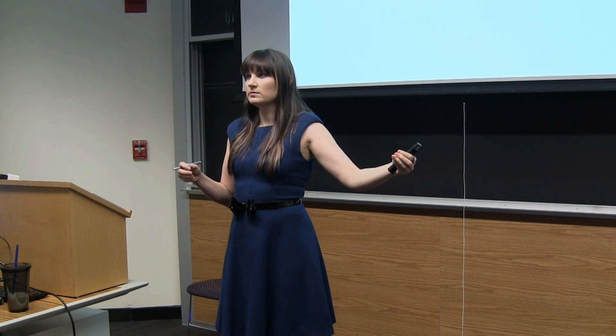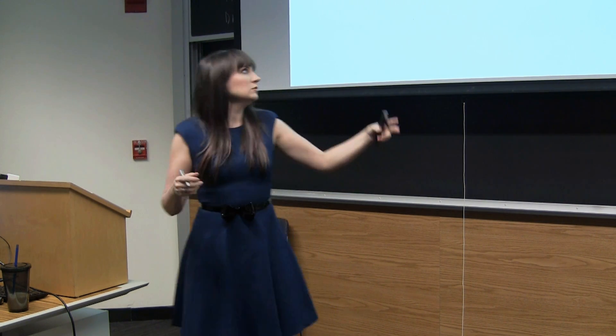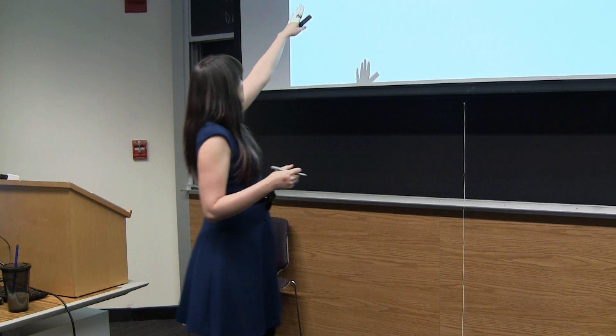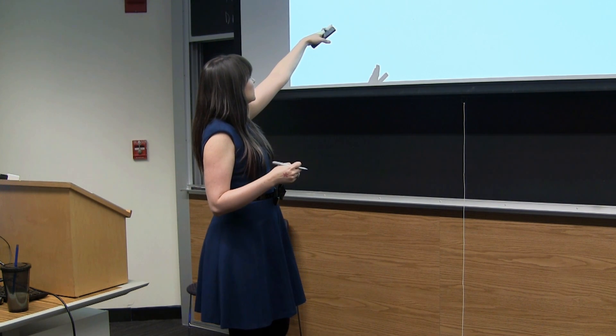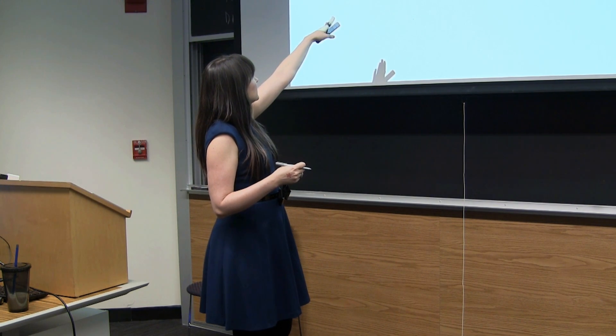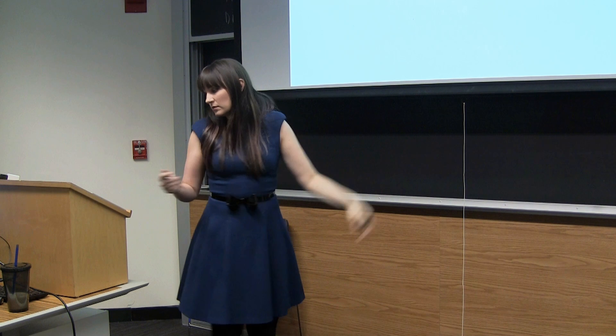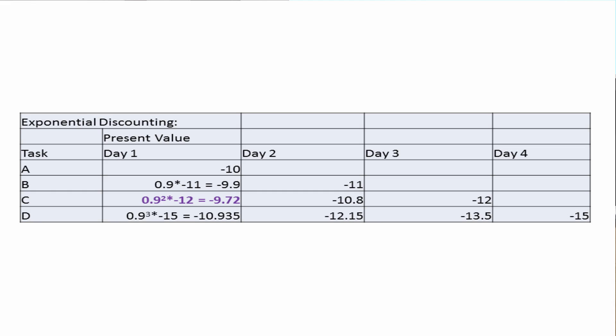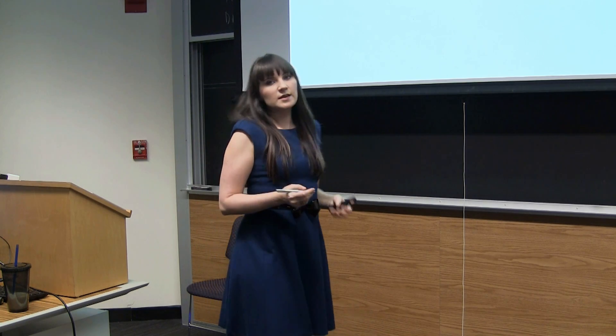Knowing that the rational individual is maximizing the present value of their utility, they pick the option that is the least bad — which appears to be activity C. So on day one, they plan to do activity C, which happens to be on day three.